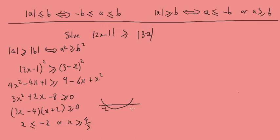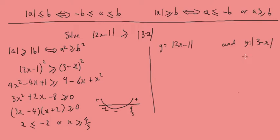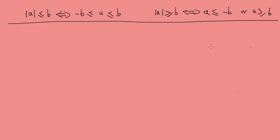Looking at a number line with minus 2 and 4 over 3, the inequality is negative between these points and positive outside them. Now we can graph this. We'll sketch y equals the modulus of 2x minus 1 and y equals the modulus of 3 minus x, and write the inequality: modulus of 2x minus 1 is greater than or equal to modulus of 3 minus x.